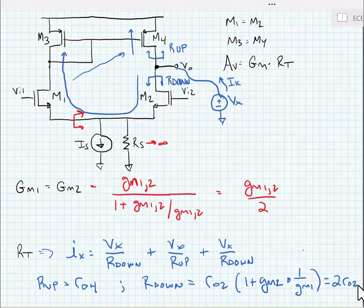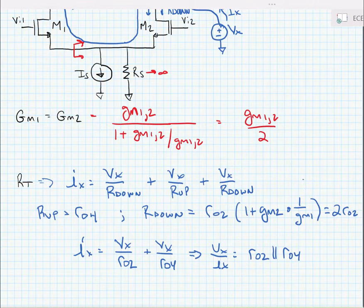All right, so let's make our substitutions into our R total equation. When we make our substitutions into our KCL equation that we wrote to find RT, we find that Vx over Ix is equal to RO2 in parallel with RO4. Now it's important to realize that this is probably what we would have expected, but it happens because of the current mirror action that produces a replica of Vx over R down. So we get ultimately two Vx over R down currents.